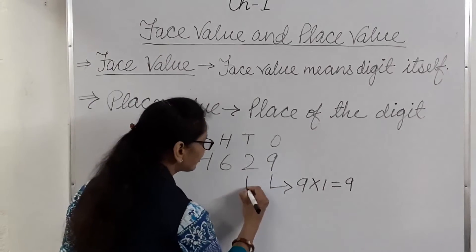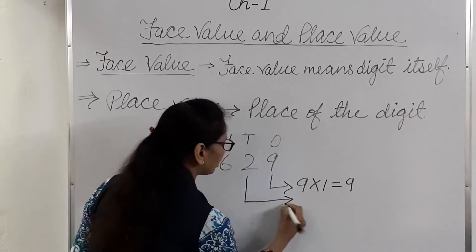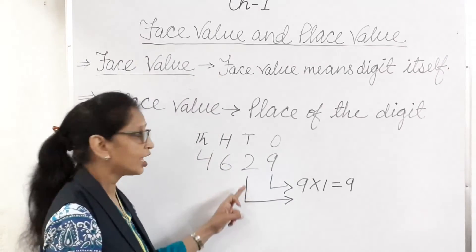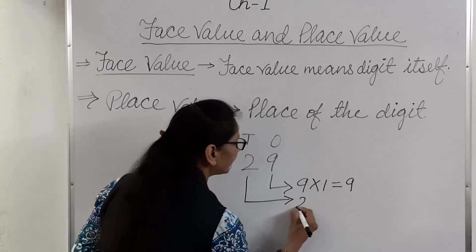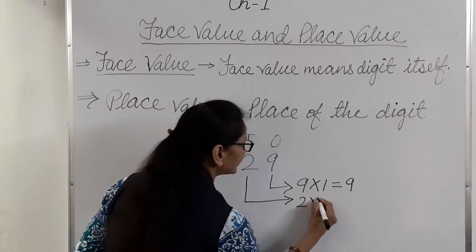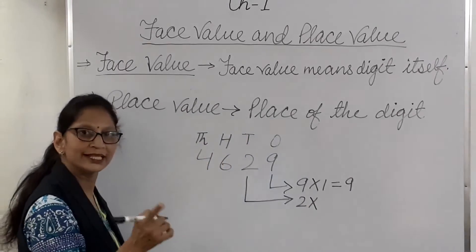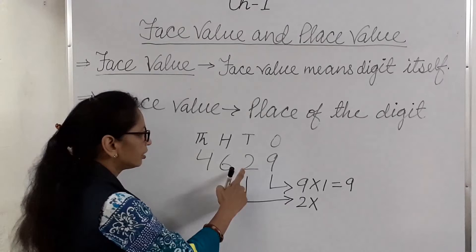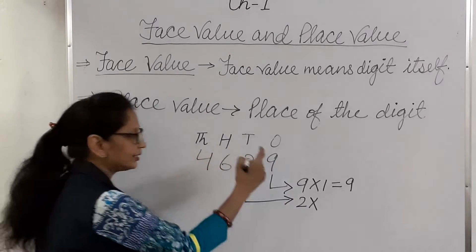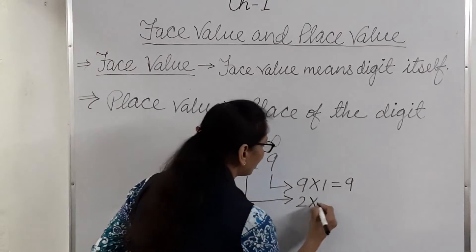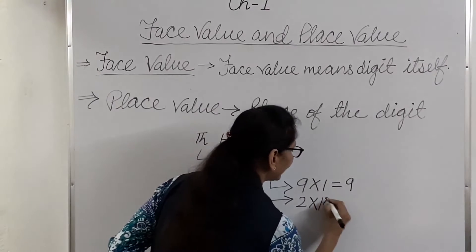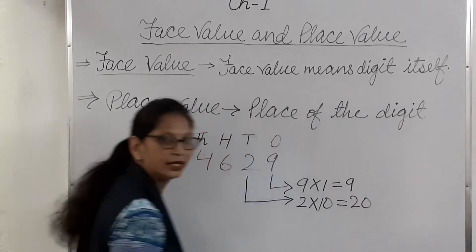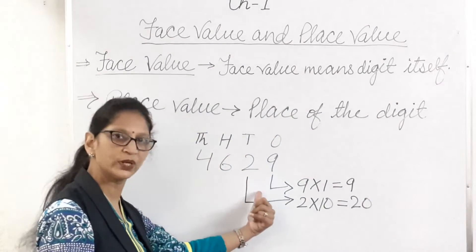What is the place value of 2? Place value of 2 is 2 multiplied by the place where it is put. 2 is put in the tens place. So 2 multiplied by 10 is equal to 20. Place value of 2 is 20.